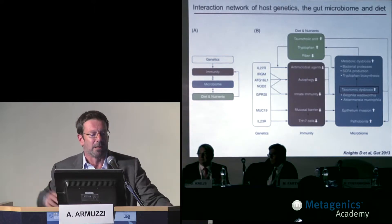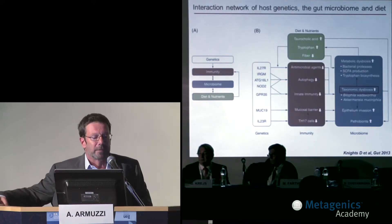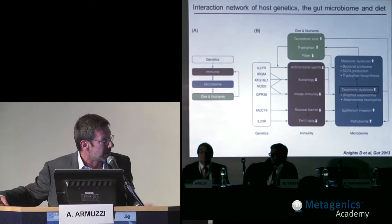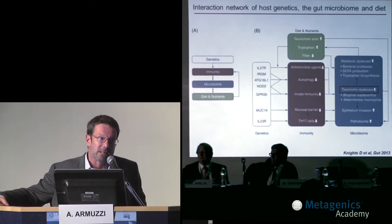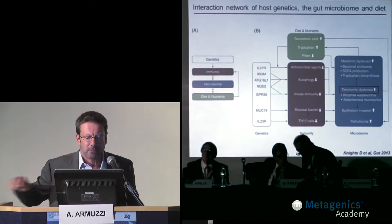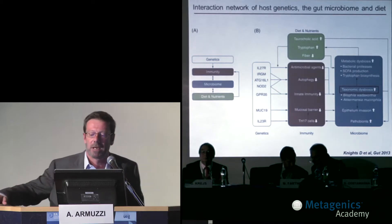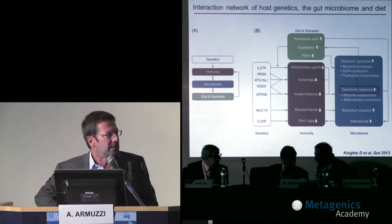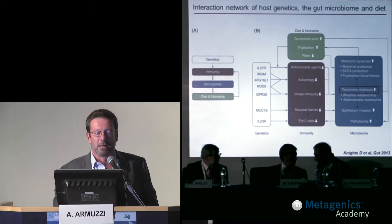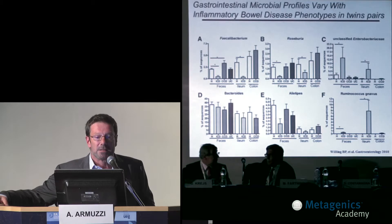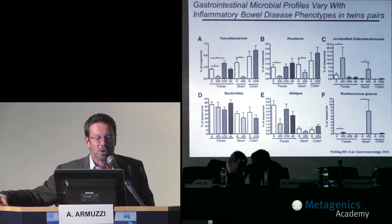In colonic inflammation, it is difficult to say where the problem starts, but probably the interaction between genes, the microbiome, diet, lifestyle, and stress may influence and determine a sort of taxonomic dysbiosis inside the intestine, with all the consequences inside the mucosal immune system that is triggered by genetic predisposition in patients who develop Crohn's disease or ulcerative colitis.